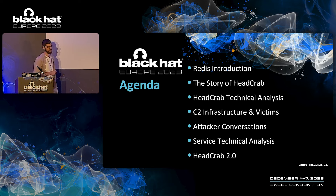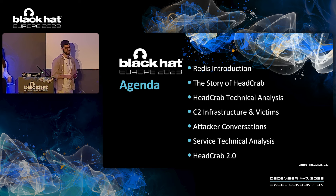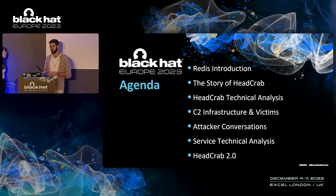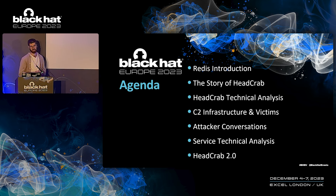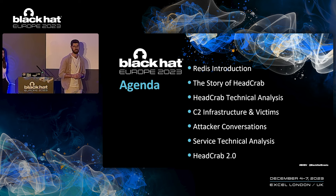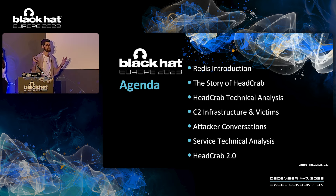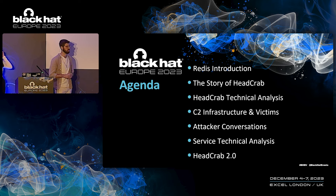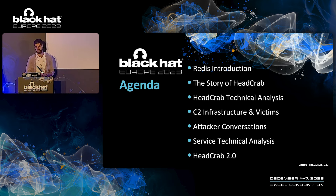We're going to do a quick Redis introduction so you all know what we're talking about. Then we're going to talk about how we discovered the HeadCrab malware, along with why we gave that malware that name. We're going to go over the technical analysis of the malware and its C2 infrastructure, along with how we were able to find victims of the malware across the globe. Then we're going to get to the really juicy part — the attacker conversation — and what insights we discovered. In the last two parts, we're going to talk about two new tools used by the attacker for the first time, unveiling that here at Black Hat.